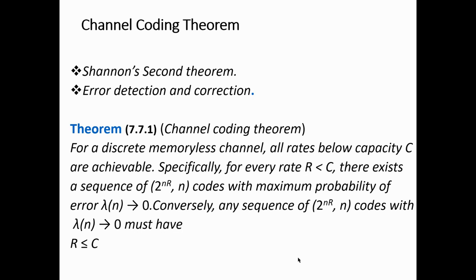If the signal generation rate R is less than or equal to the channel capacity C, then the probability of error occurring during transmission will be very low.